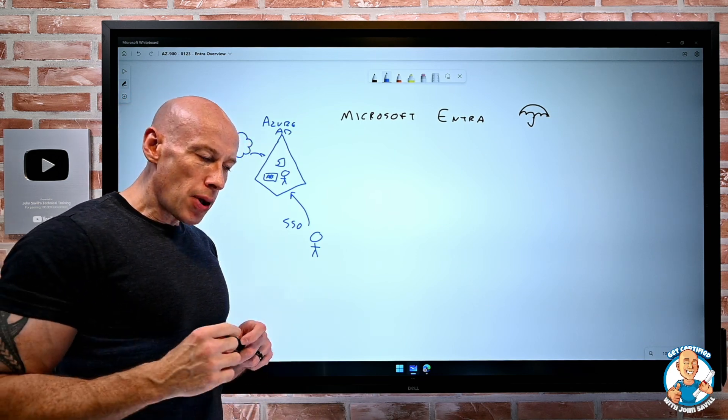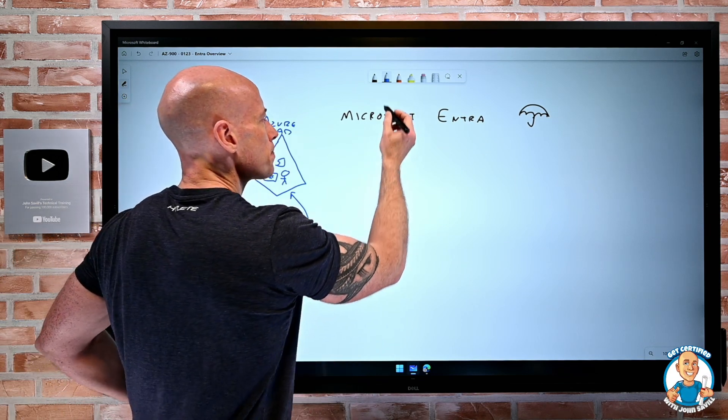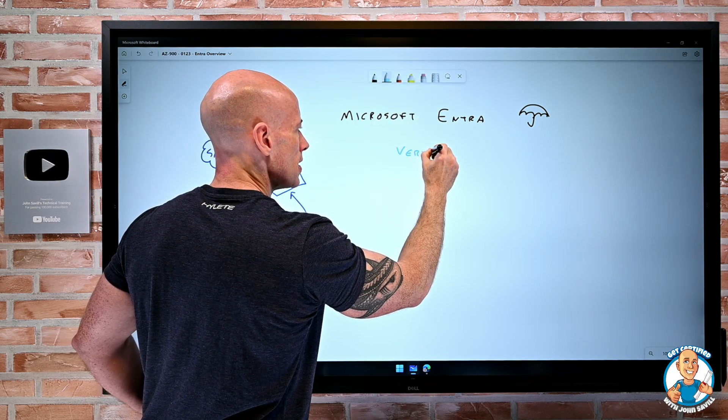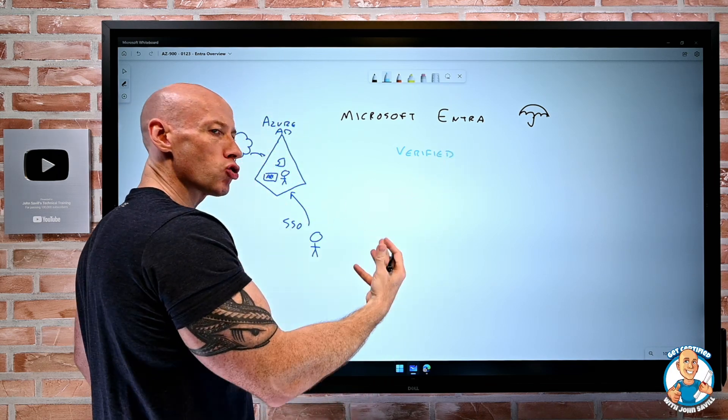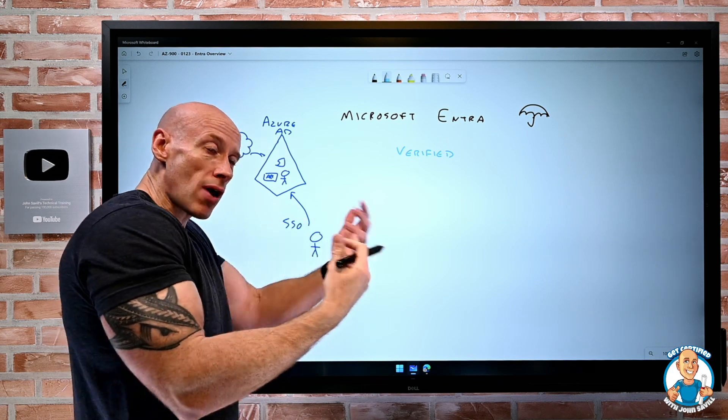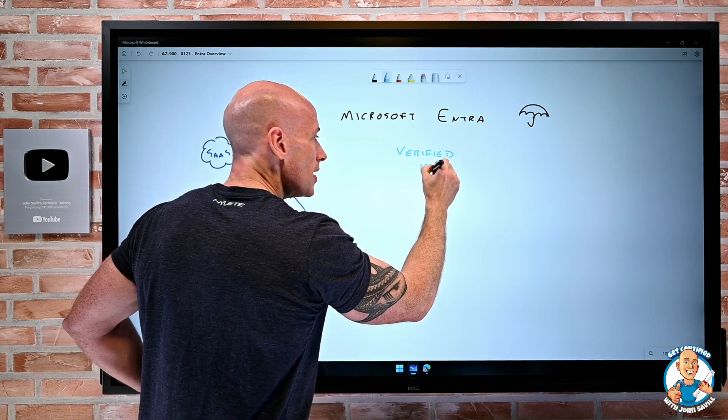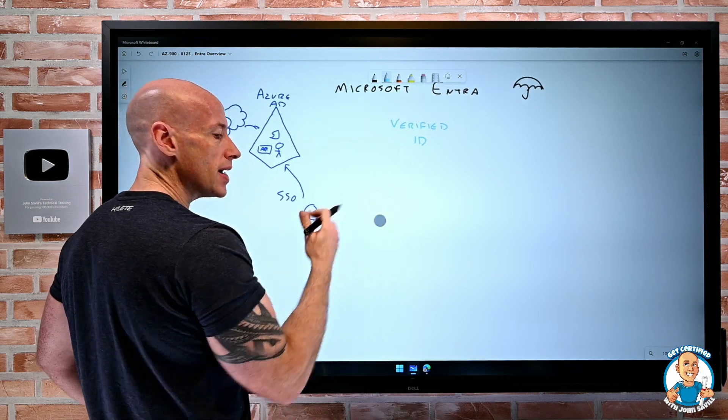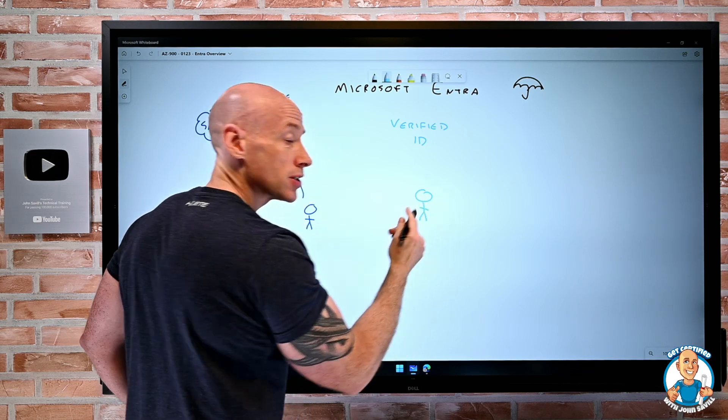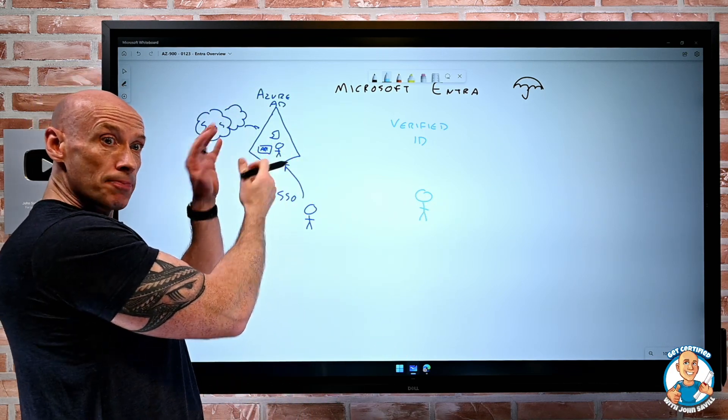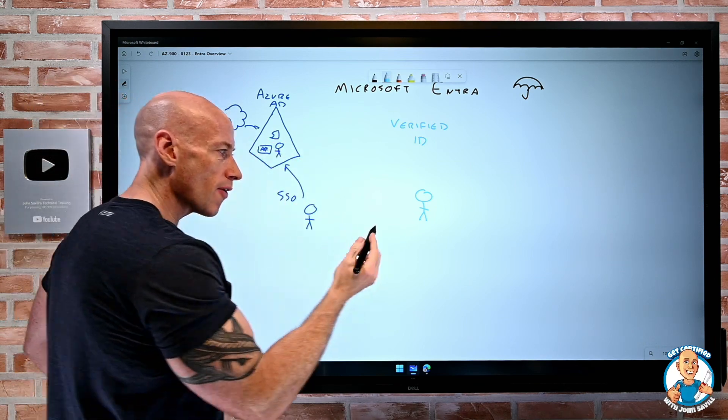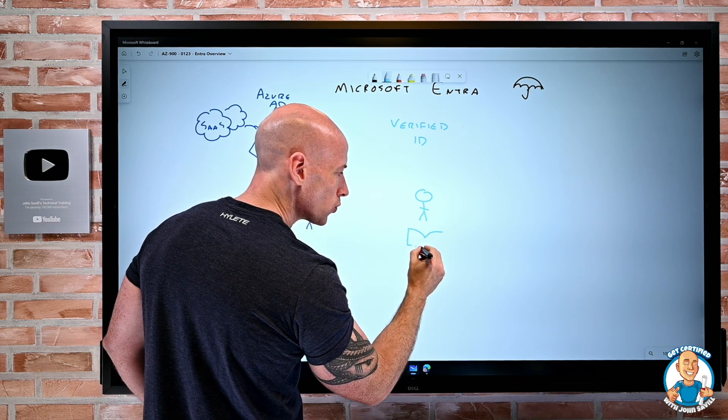Then we also have this component called verified ID. Verified ID is all about the idea of decentralized identities and decentralized identifiers that represent some object. Now with verified ID, the point is that I am now in the middle. If we looked at Azure AD, who's in the middle is Azure AD. But it's all about the Azure Active Directory.